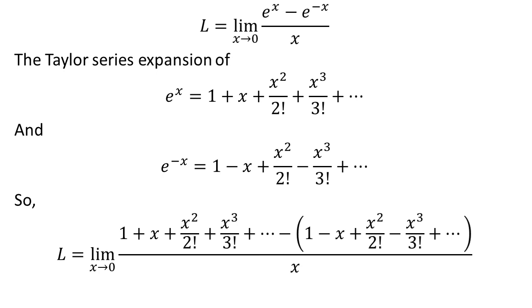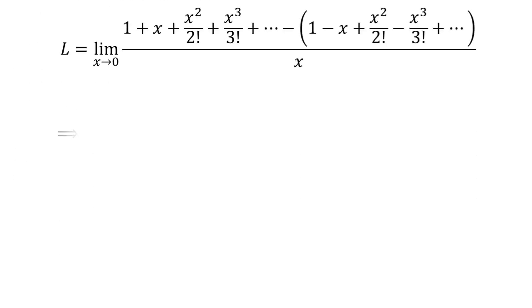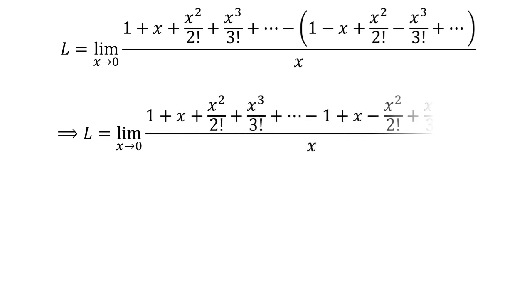So the limit L equals the Taylor series expansion of e^x minus the Taylor series expansion of e^(-x), all upon x, as x approaches 0. Here, I have taken off the brackets in the numerator.